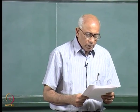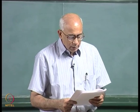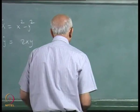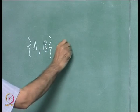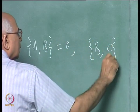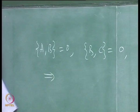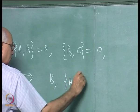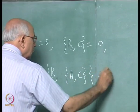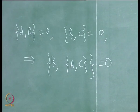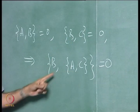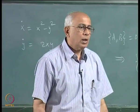Finally: if the Poisson bracket of A with B vanishes and that of B with C vanishes, does the Poisson bracket of A with C necessarily vanish? That is false. From the Jacobi identity, if {A,B} = 0 and {B,C} = 0, the Jacobi identity gives information about {A,{B,C}} + cyclic terms, but all you can say is that {A,C} need not be zero.